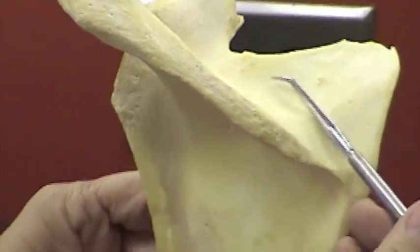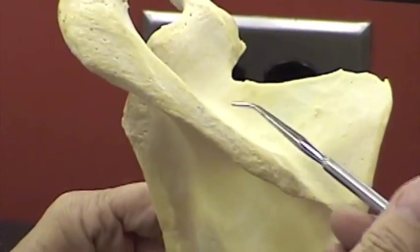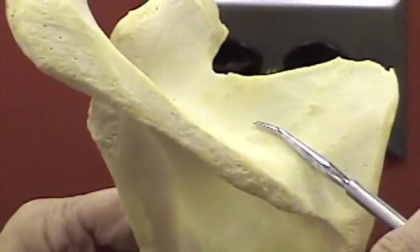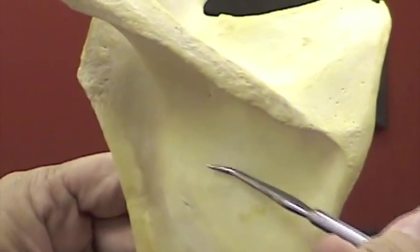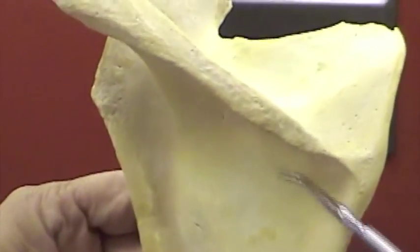Superior to the scapular spine is the supraspinous fossa. Inferior to it is the infraspinous fossa, this region right here.